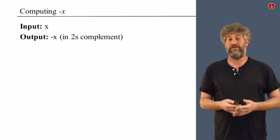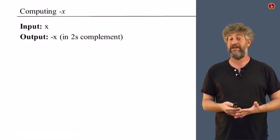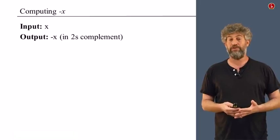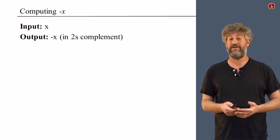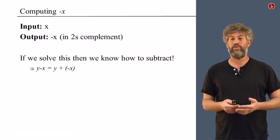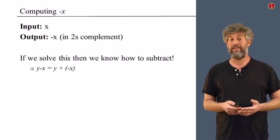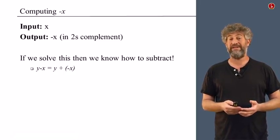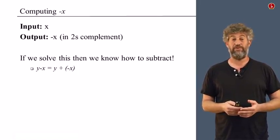So one thing we may still need to do is given a number, get its negation. So given as input x in binary, output its negative, the number negative x, again in two's complement. Why would we want to do that? Well, for one thing, remember that we still didn't see any circuit that does subtraction. But once we can solve this problem, then definitely we have already solved the subtraction problem, because if you want to do y minus x, you just need to add negative x to y. And addition we already know how to do.